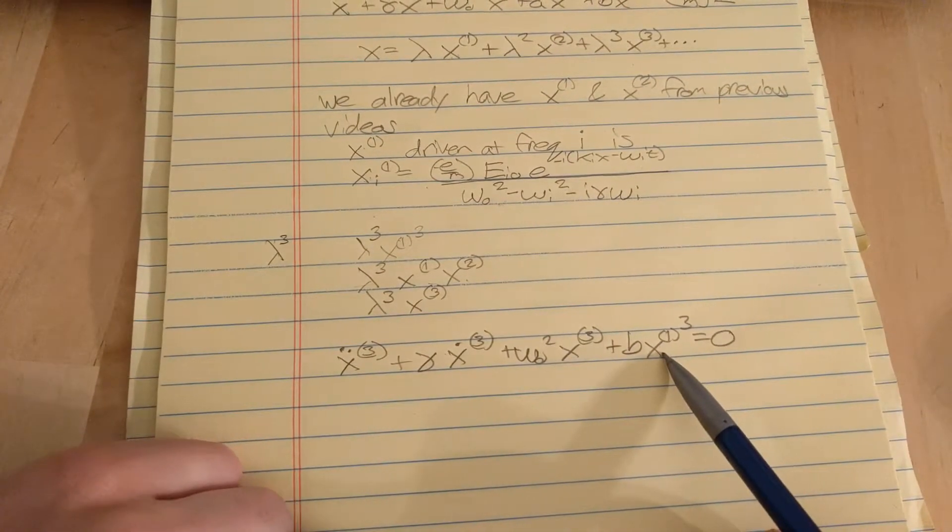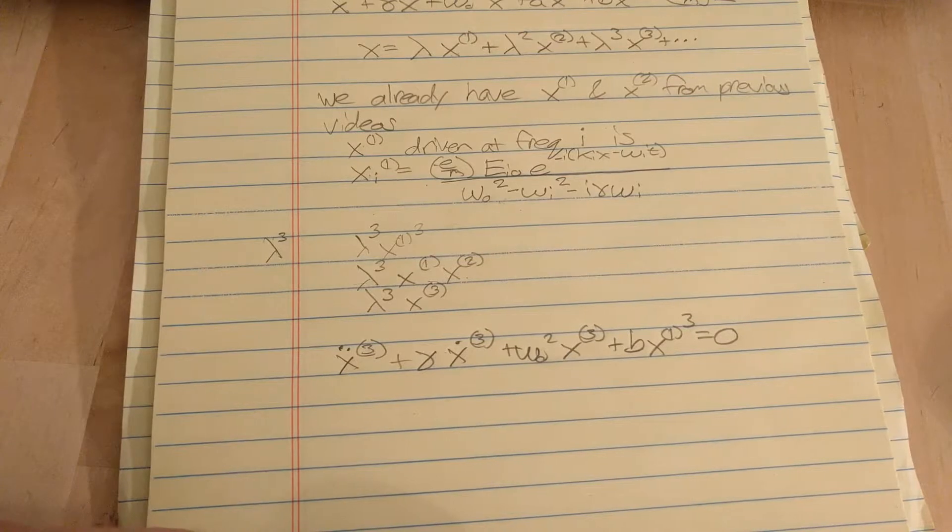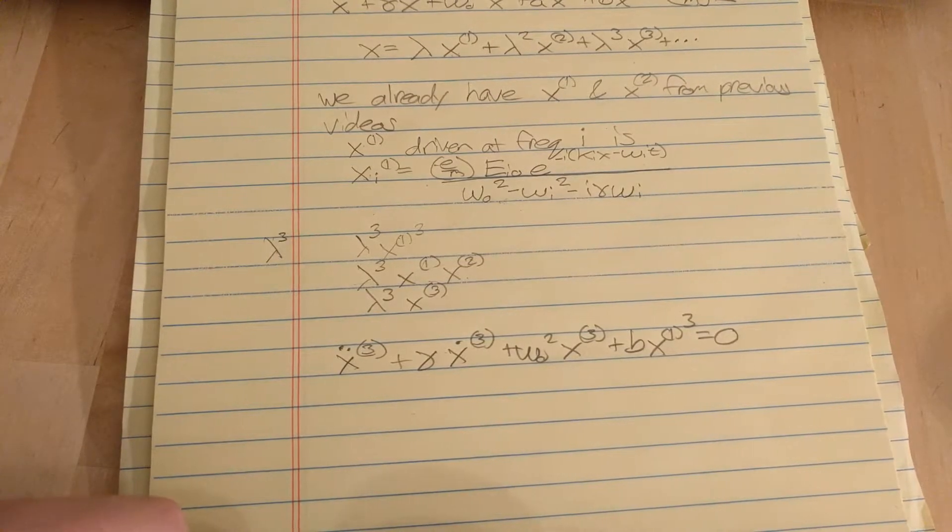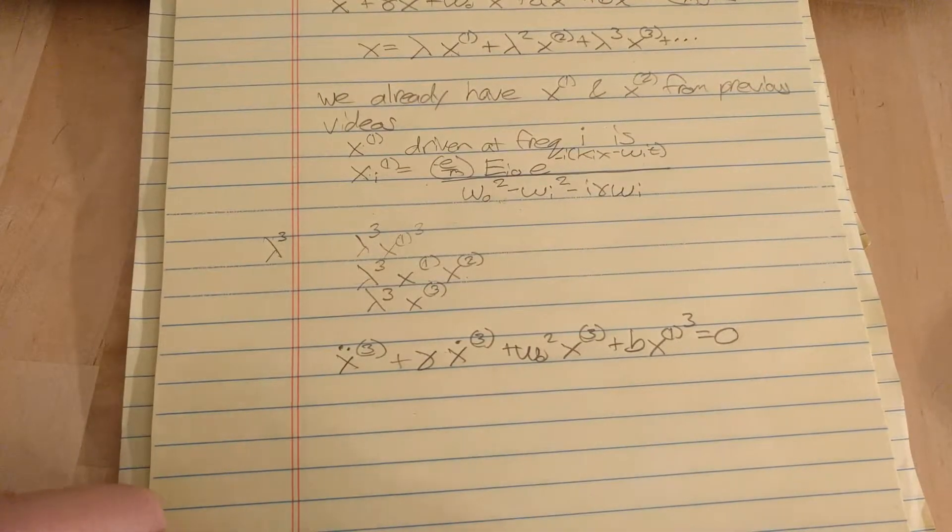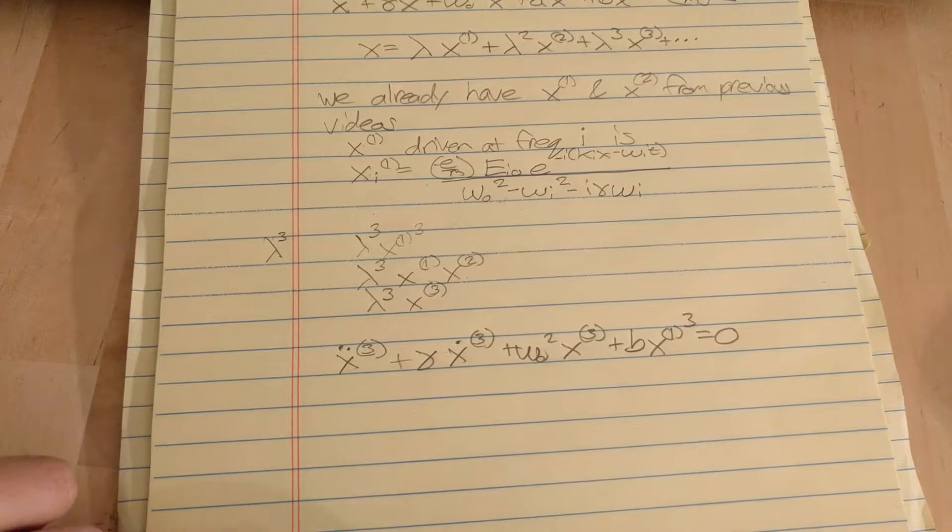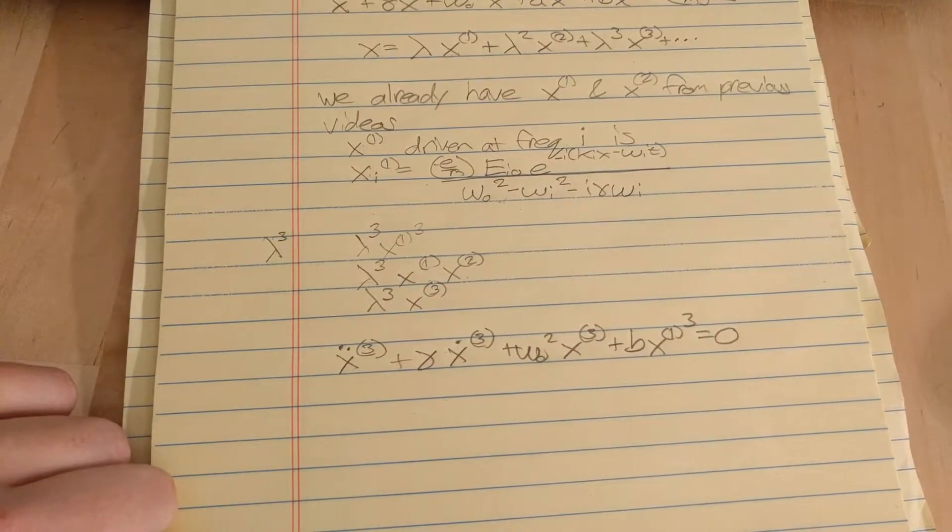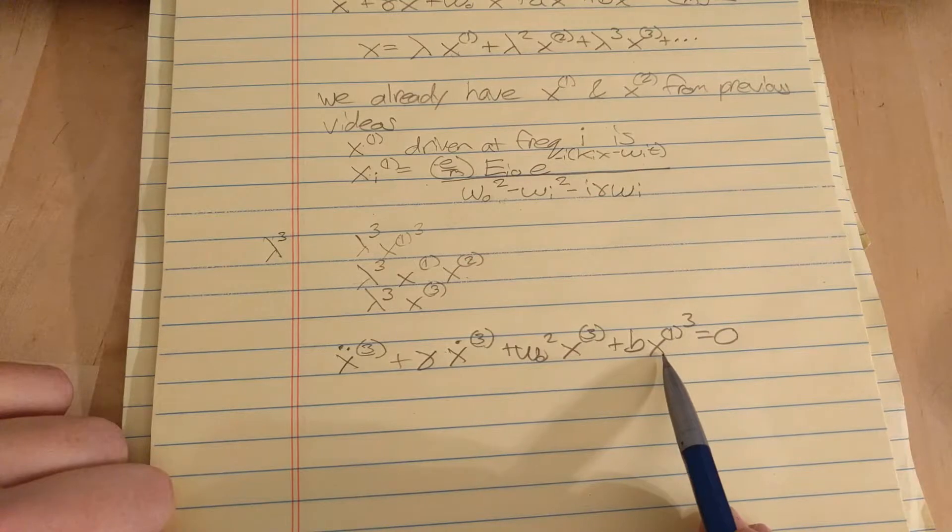And we already found x1. And since we're doing four-wave mixing now, the most general incident field we can assume is a field with three different frequencies. Frequencies i, j, and k.